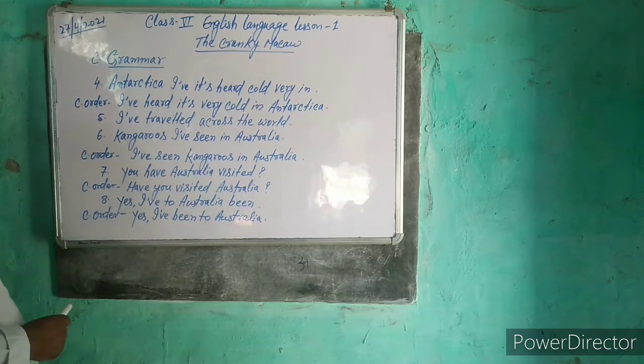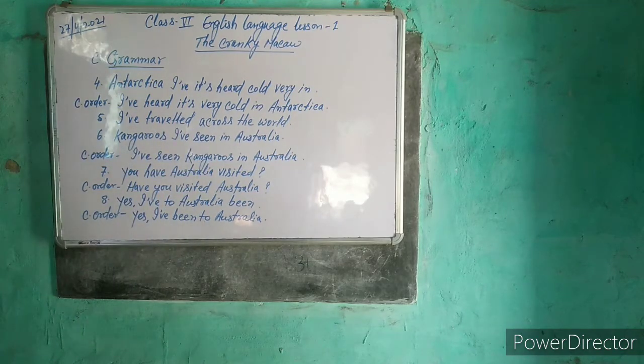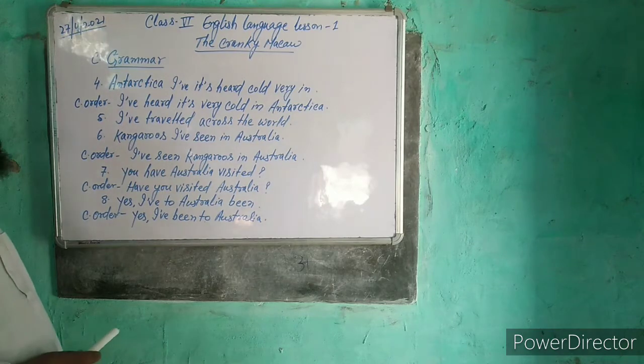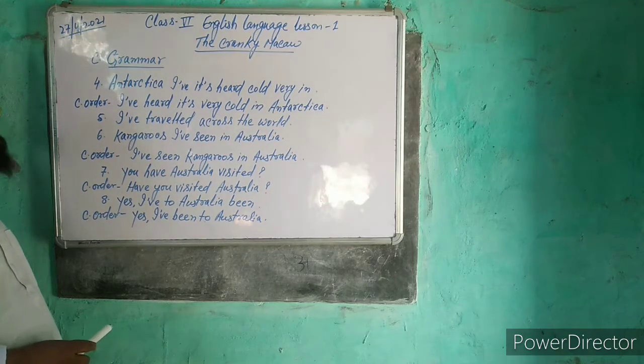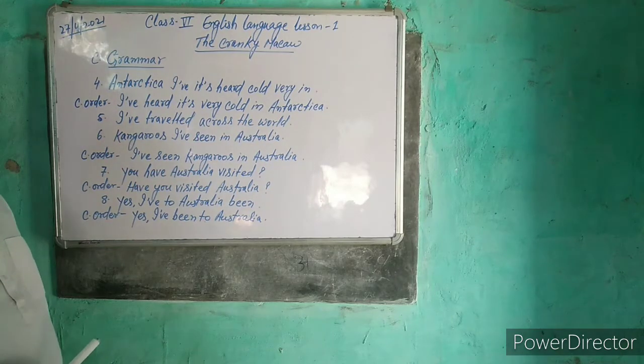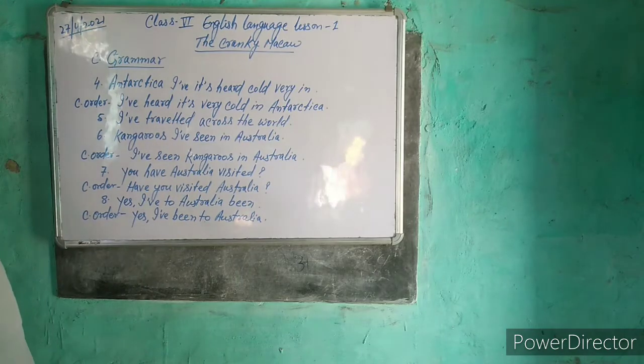The fifth sentence is: I have traveled across the world. This sentence is already in correct order — it is a complete sentence with words already arranged correctly.